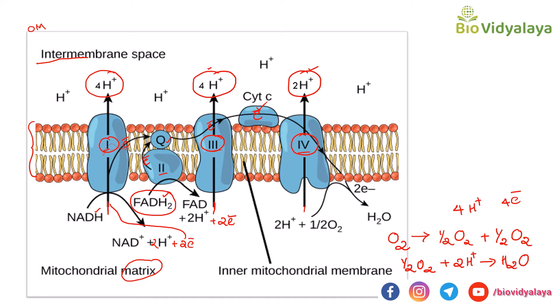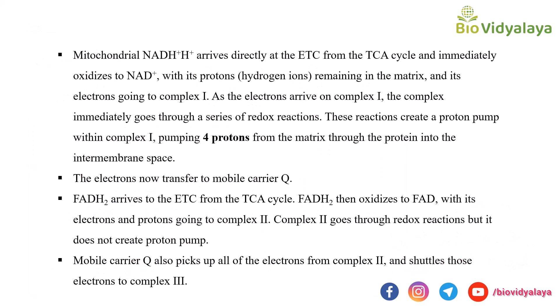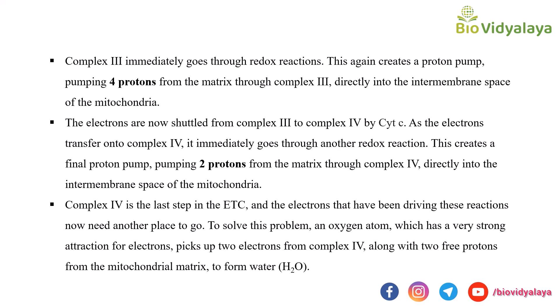I think this is clear. I've given a summary slide for your easy reference — you can take a screenshot. The final electron acceptor is oxygen. Think about this: if oxygen is not present, what will happen? Comment your answer below. Next, we will discuss inhibitors of the electron transport chain.